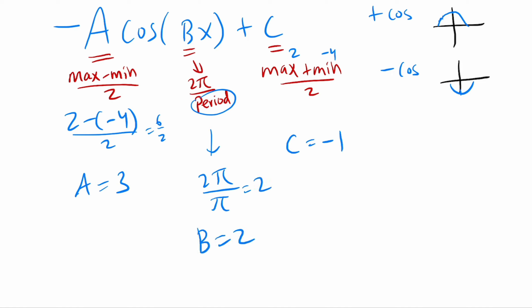So if you have A of 3, B of 2, C of negative 1, and it's a negative cosine, our final answer is going to be negative for the cosine. Negative, A was 3, negative 3. Cosine of B is 2, so 2x plus C, but C is negative 1, so we can write that as minus 1. So this would be our final answer.